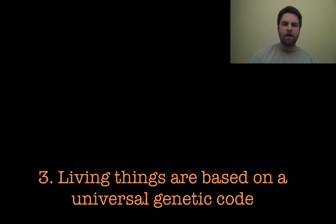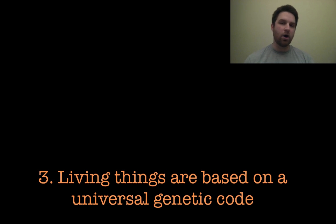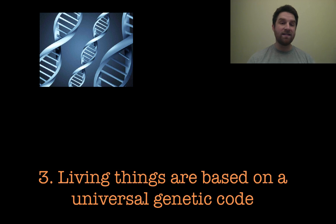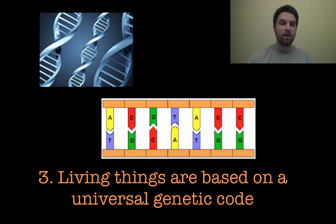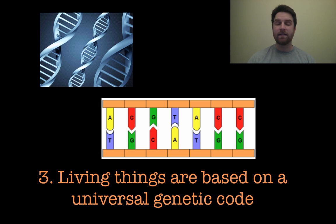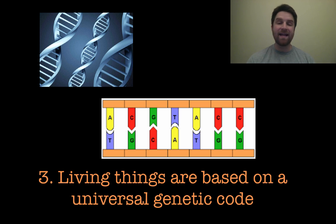The third thing for something to be considered living is that living things are based on a universal genetic code. Our DNA is a double helix made up of four different base pairs — A, G, C, and T — and they pair up with one another: G to C and A to T. That's basically what gives the instructions for all of our cells and how they are supposed to act.